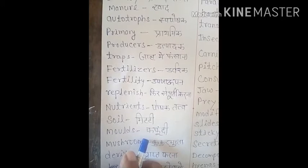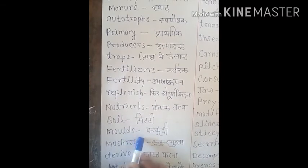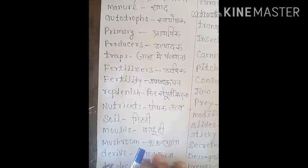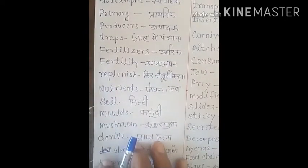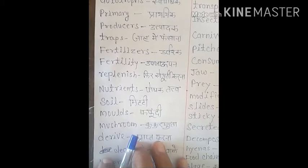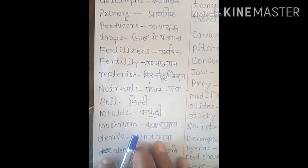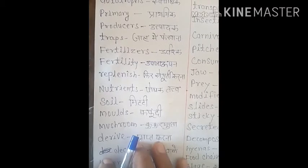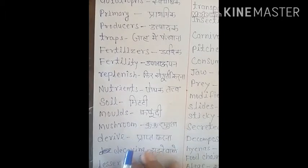Jaise hum keh sakte hain ki plants like molds and mushrooms do not contain chlorophyll. Yeh kuch plants hote hain jin mein chlorophyll nahi hota, kyunki they are not green. Green plants like their leaves have the chlorophyll, but kuch plants hain jis mein molds bhi hai ya mushrooms bhi hain — they do not contain chlorophyll.